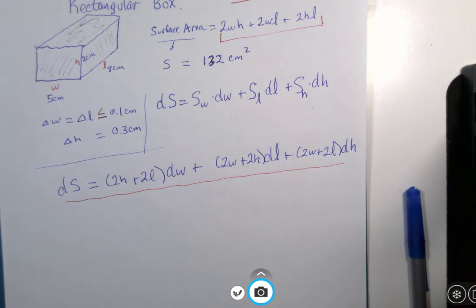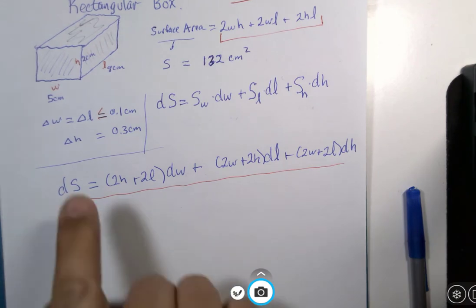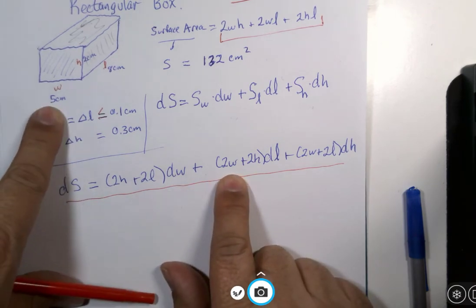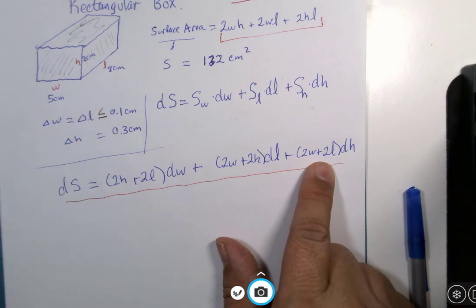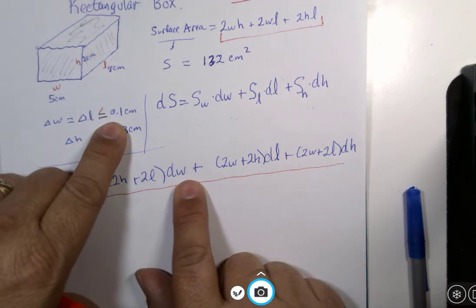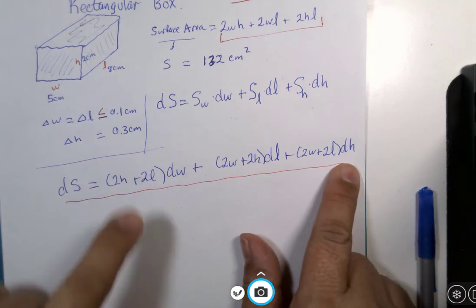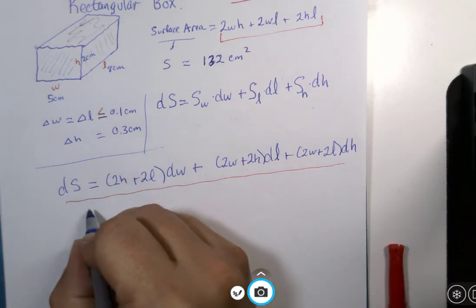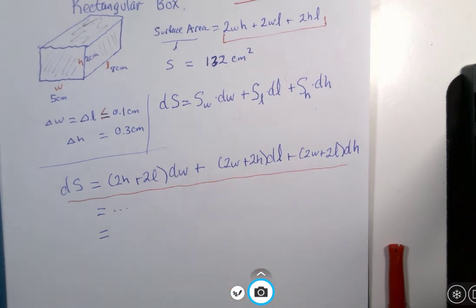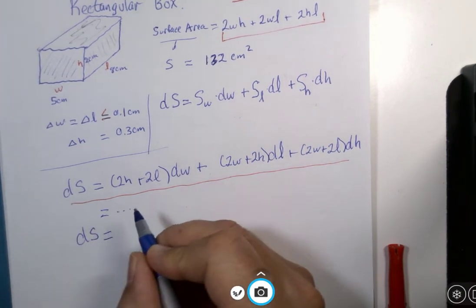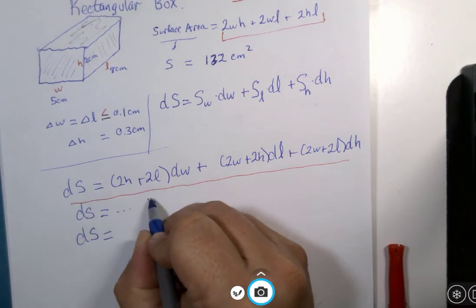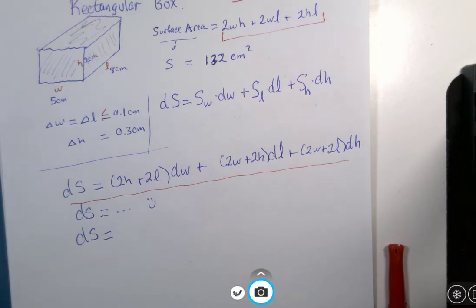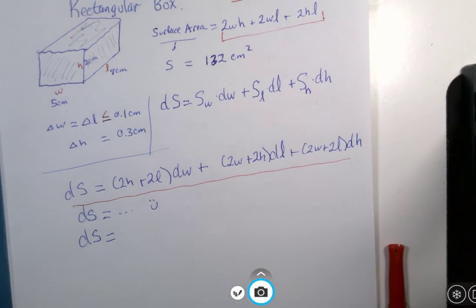So now here is the question. What if you replace H with 2 and W with 5 and L with 8 and DW with 0.1 and DL with 0.1 and DH with 0.3? What would you get if you did the substitution? What would DS equal if you went through that substitution? So this is where you pause and you substitute numbers and maybe use a calculating device. Maybe you don't have to use a calculating device for this one. This one isn't too bad without a calculator. And when we come back, let's compare notes and see if we got the same thing.